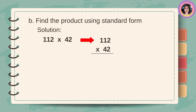Let's find the product using standard form: 112 times 42. 2 times 2 is equal to 4, 2 times 1 is 2, and 2 times 1 is 2. 224 is the partial product. Then, 4 times 2 is equal to 8, 4 times 1 is 4, and 4 times 1 is 4. Now let's add: bring down 4, 2 plus 8 is equal to 10, carry 1. 1 plus 2 plus 4 is 7, then bring down 4. The answer is 4,704.